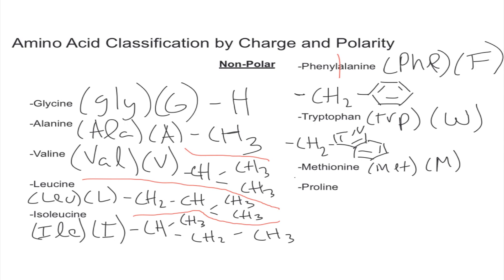Moving on to methionine, abbreviated MET with one-letter M. Its structure is CH2-CH2-S-CH3. This is called a thioether — just like an ether which has two bonds but instead of oxygen we have sulfur. You can remember methionine by the thioether: two carbons, the sulfur, then another carbon group.